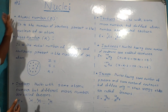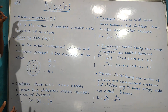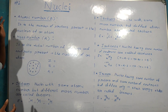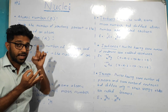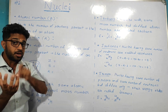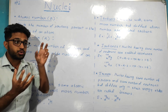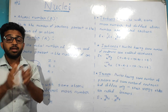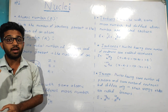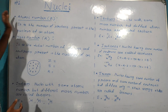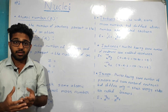This is the atomic number. The atomic number is the number of protons present in the nucleus of an atom. The atomic number is denoted by the letter Z.